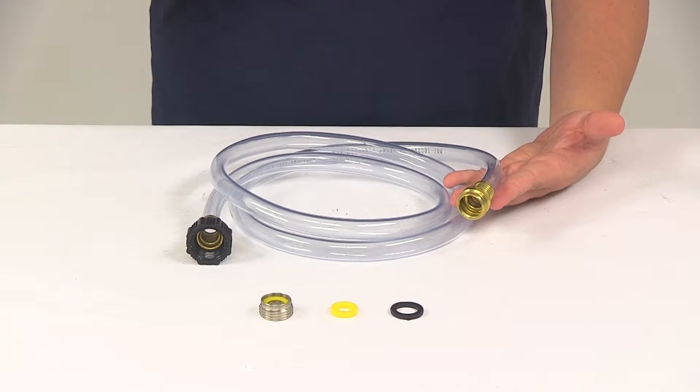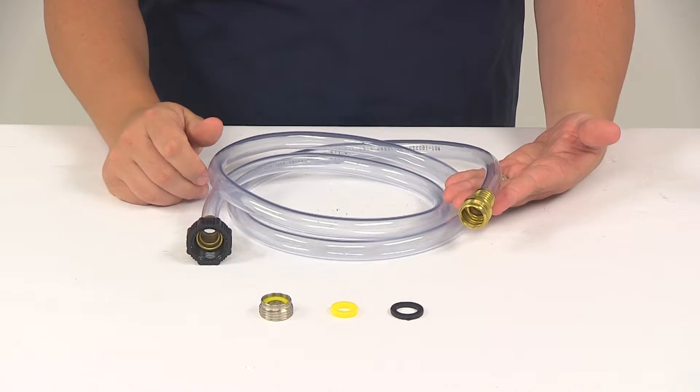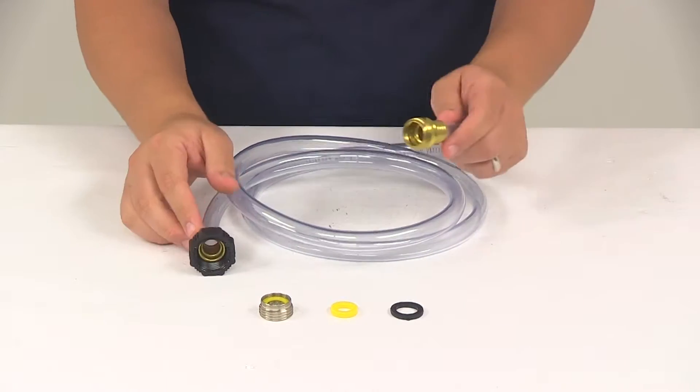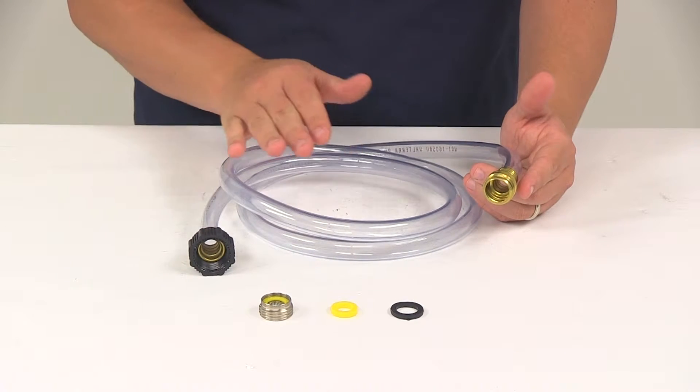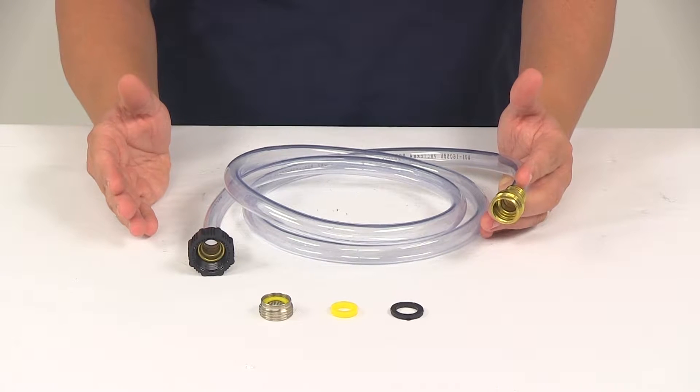So you have your tank wand and instead of connecting it straight to your water hose, you can connect it to this hose right here and then the other end of the hose is going to run to your bathroom faucet. That enables the use of hot water which is going to allow for better cleaning.